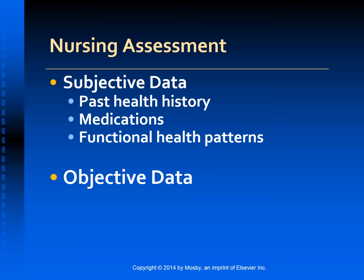The subjective data includes past health history regarding hemophilia, exposure to infected persons, ingestion of contaminated food or water, exposure to benzene, carbon tetrachloride or other hepatotoxic agents, crowded unsanitary living conditions, exposure to contaminated needles, recent travel, organ transplantation, exposure to new drug regimens, hemodialysis or transfusion of blood or blood products before 1992, and HIV status if known.